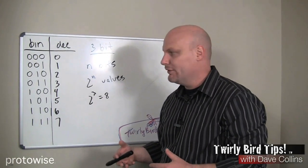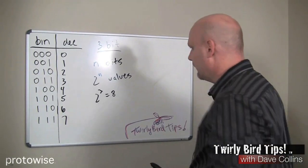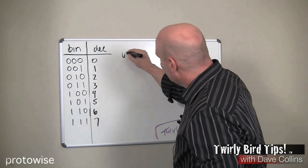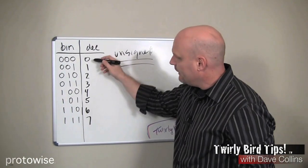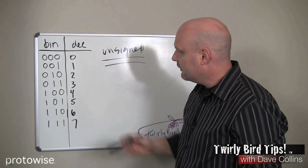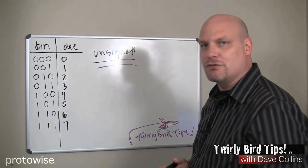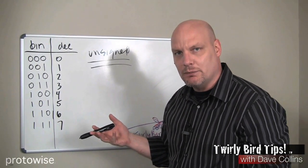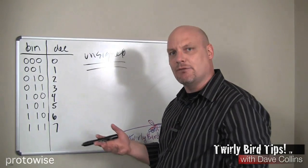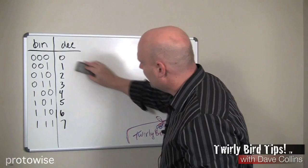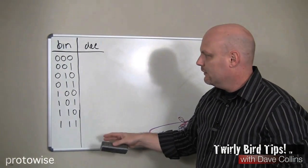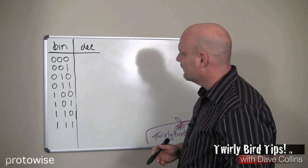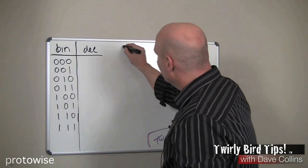With a four-bit system we'd have 16 possible values, which gets tedious. So we keep it simple with three bits to illustrate all the concepts we need. This is an unsigned system — we have eight possible binary values and eight decimal values, all unsigned positive values. We want a system where we can split up this binary number space so that some numbers are positive and some are negative, ideally half and half.